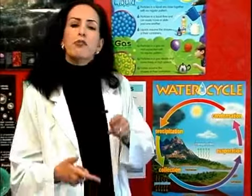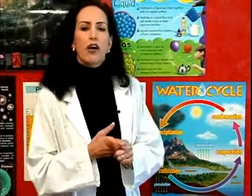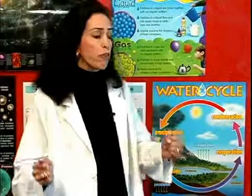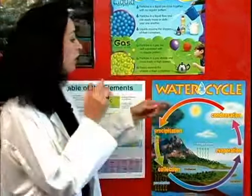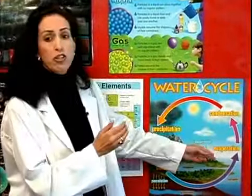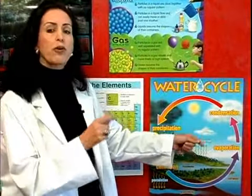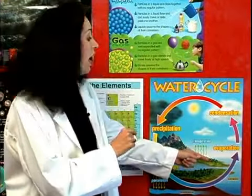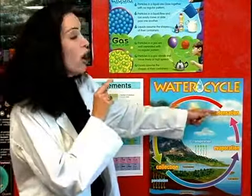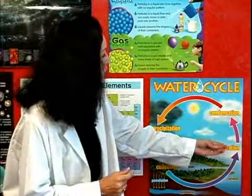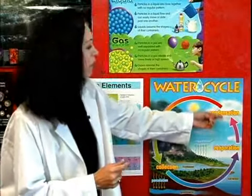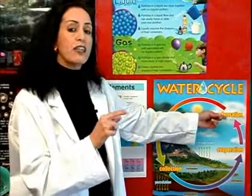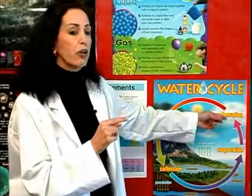Now what happens when the sun beats down on water? Well the water cycle begins. First, evaporation — this is where the liquid turns into gas. Now we have condensation. So it goes up in water form, and this is where the gas turns into liquid.